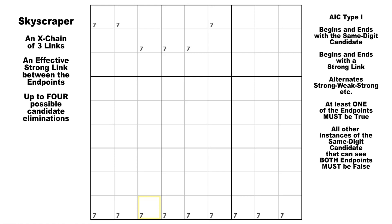In an open-ended AIC with an odd number of links that starts and ends with a strong link, we know that at least one of the endpoints must be true. Here in this diagram, we have a simple three-link AIC. Starting on this candidate seven in row two, column three, there's a strong link down to row nine, column three. Then there's a weak link across to row nine, column six, and then a strong link up to row one, column six.